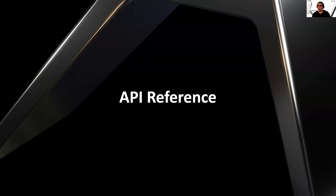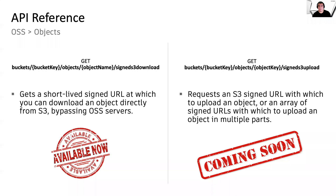When it comes to the API references, what do we have available today? You can try the download approach directly from S3. Using the following endpoint, you will get a short-lived signed URL where you can download your files, bypassing the OSS servers. Coming soon is the upload approach — keep an eye on our Forge newsletter and Forge blog for news about newly released endpoints.